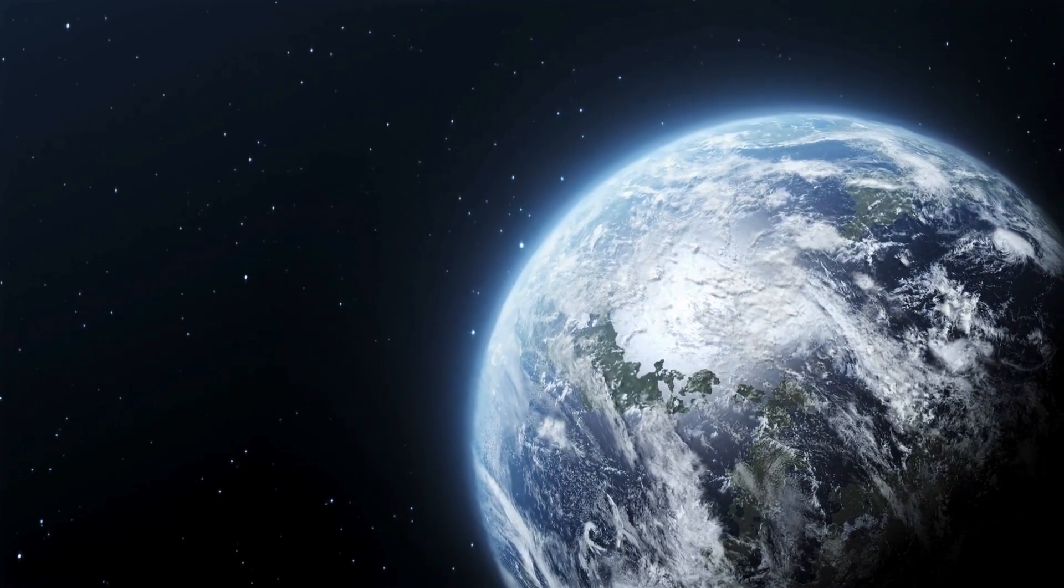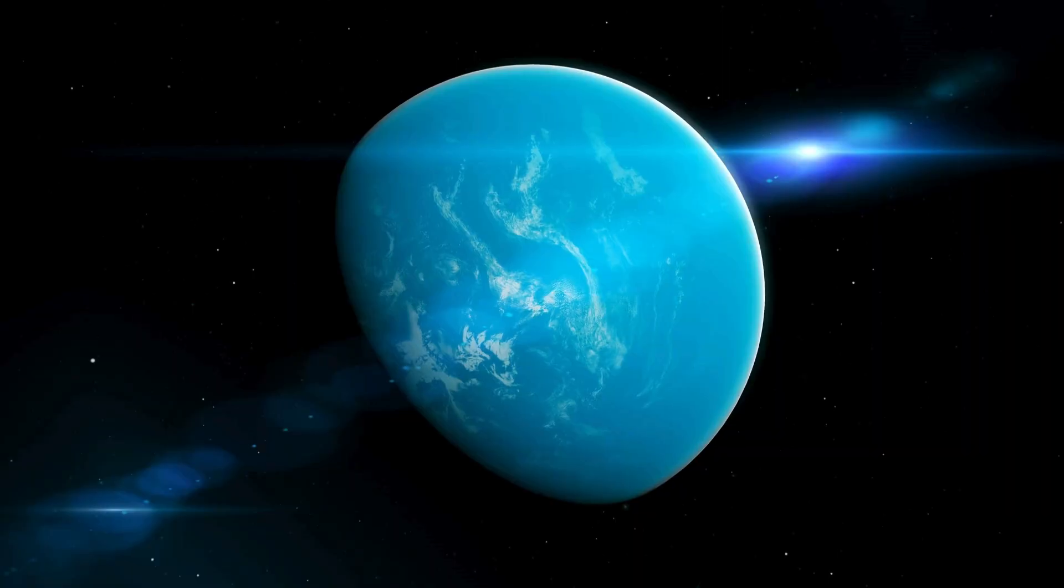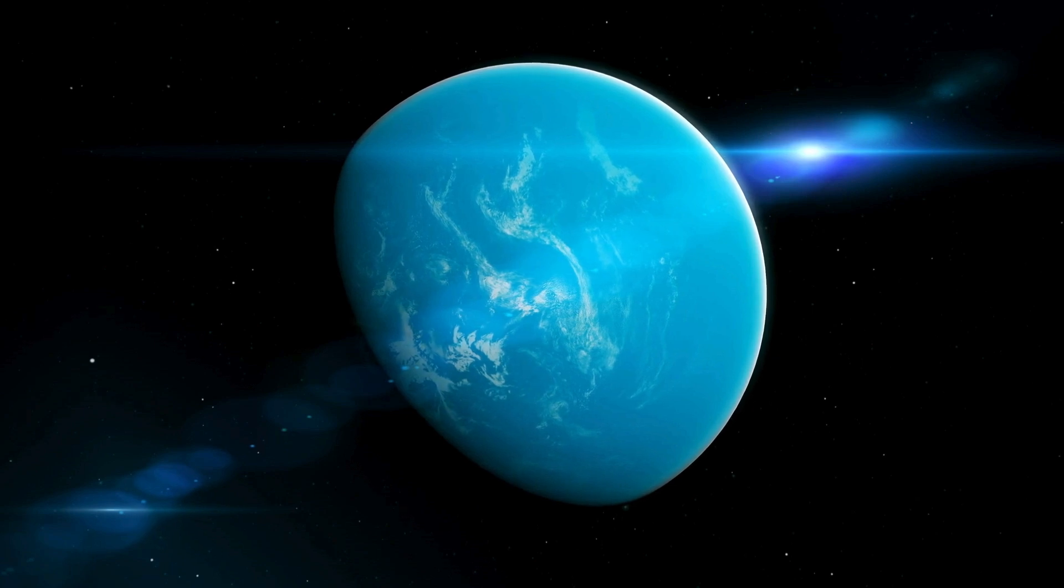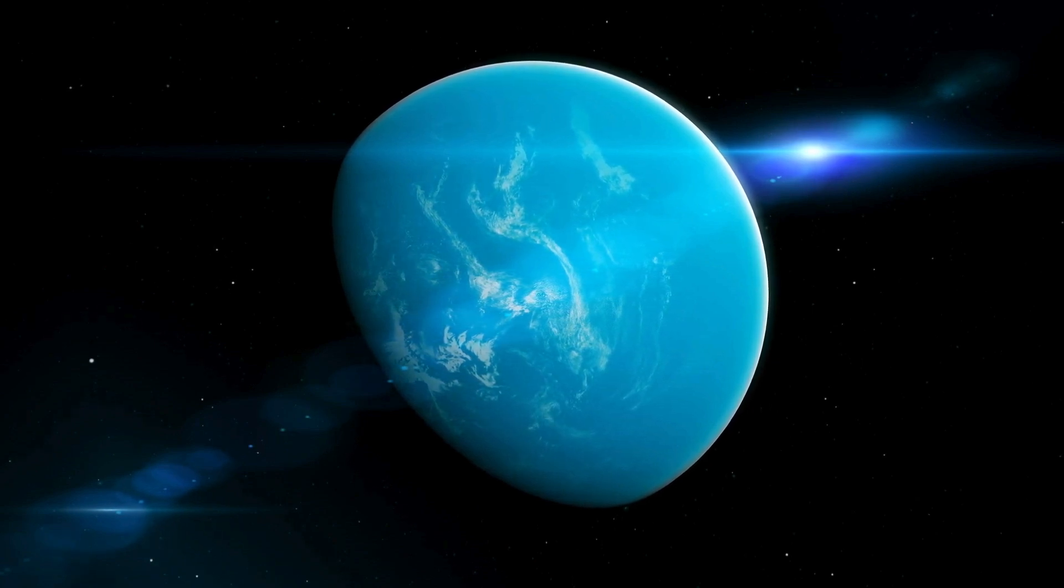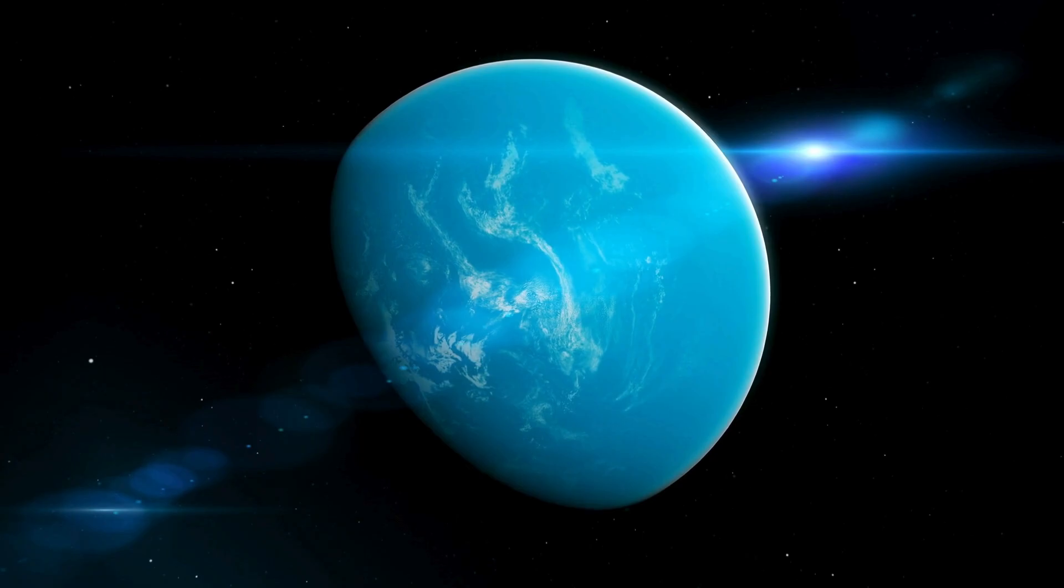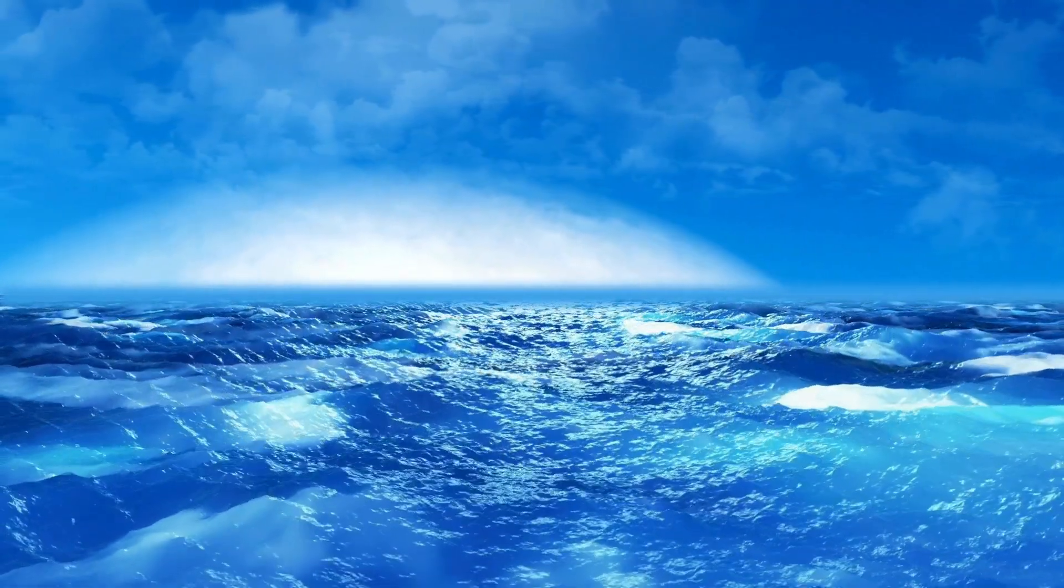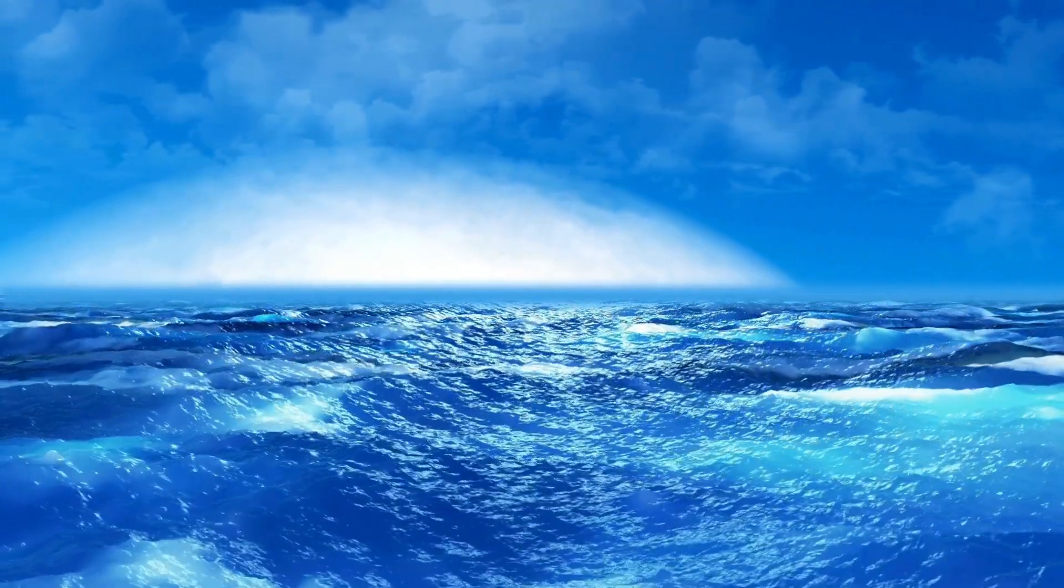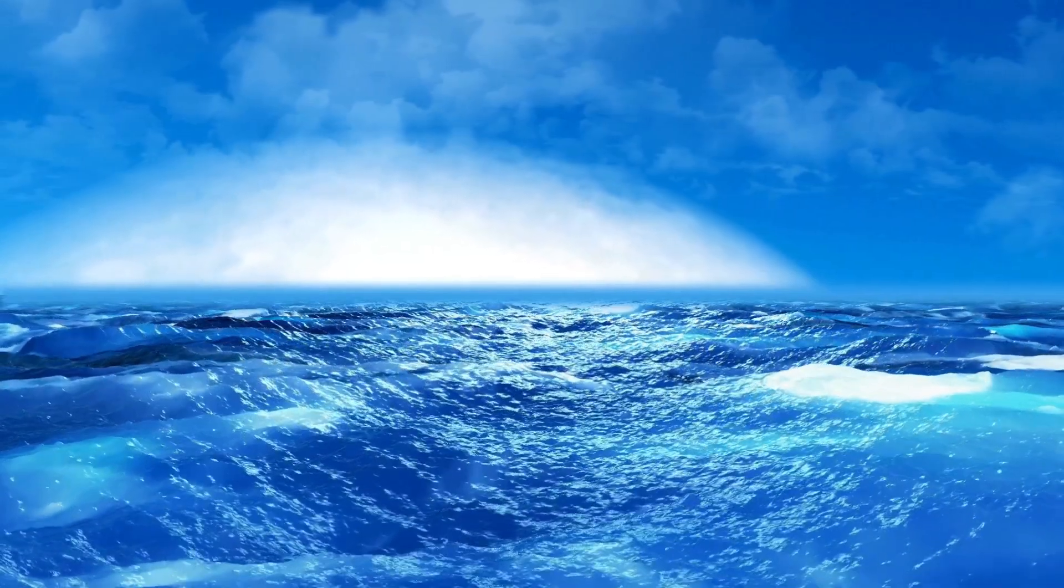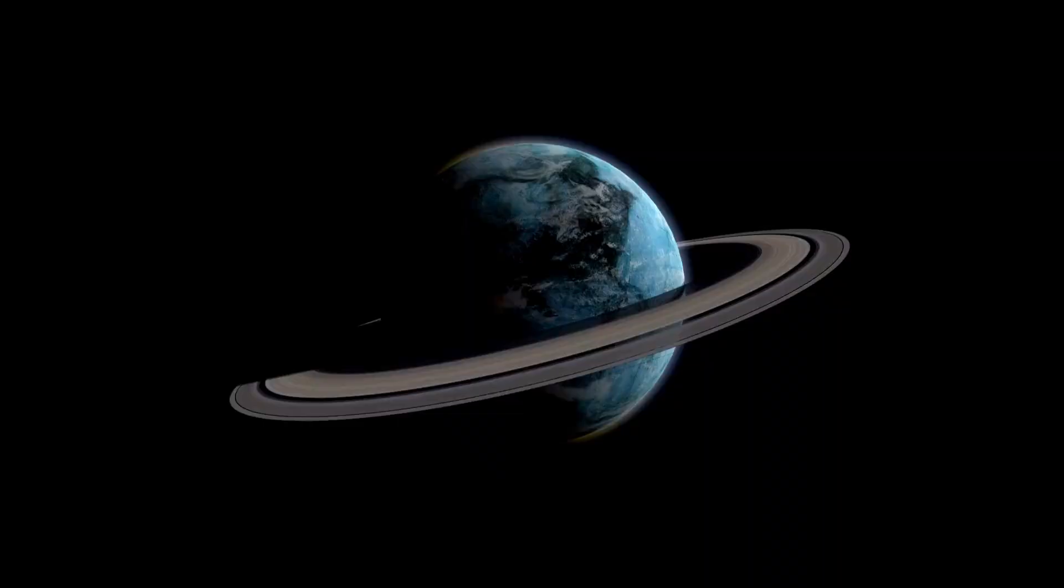Let's talk about Proxima Centauri b, the star it orbits, the red dwarf Proxima Centauri, part of the Alpha Centauri triple star system. This system is made up of Rigel Centaurus, or Centauri A, Centauri B, and Proxima Centauri, or Centauri C, creating the nearest star system to our very own solar system.